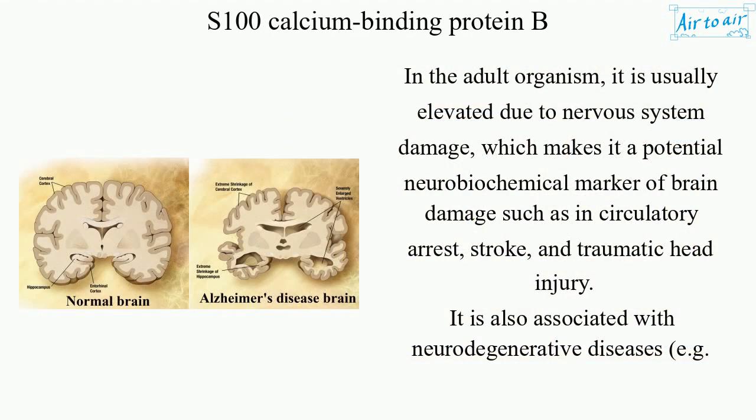In the adult organism, it is usually elevated due to nervous system damage, which makes it a potential neurobiochemical marker of brain damage such as in circulatory arrest, stroke, and traumatic head injury.